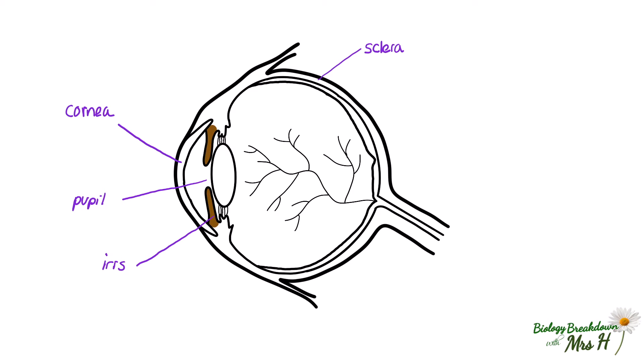Light passes through the pupil and then is refracted further through the lens, towards the back of the eye where the retina is. The retina contains receptor cells that convert the light energy into electrical impulses. The fovea is a dip in the retina that is densely packed with receptors and is responsible for producing the greatest visual resolution or acuity. Therefore, it is essential that light falls onto this part of the retina for us to be able to see in good detail.